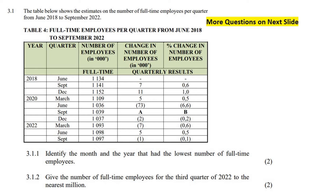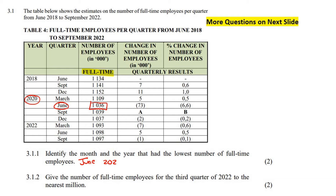The first question says identify the month and year that had the lowest number of full-time employees. So we just look for the smallest number in the table. The smallest I can see is 1,036. So the answer is going to be June 2020.